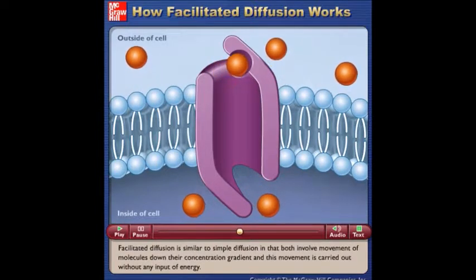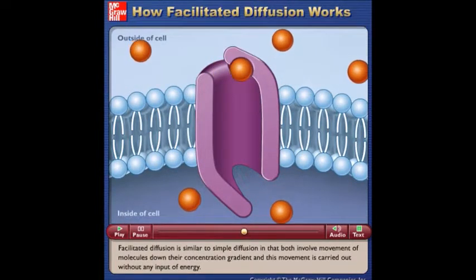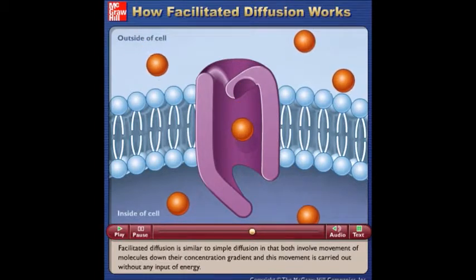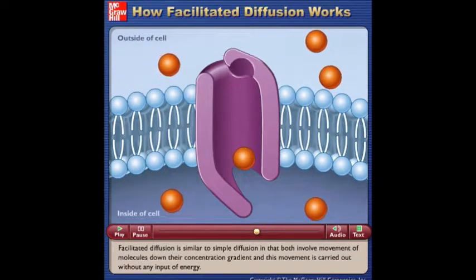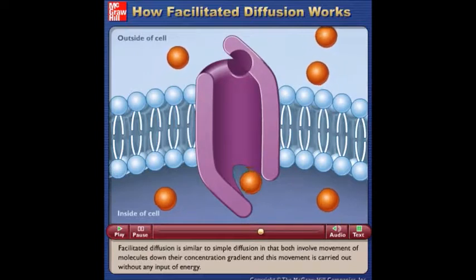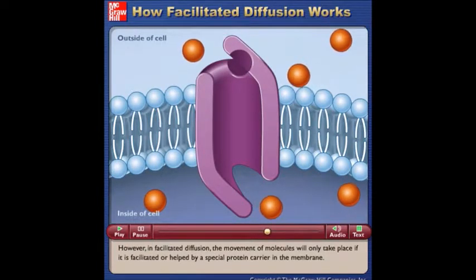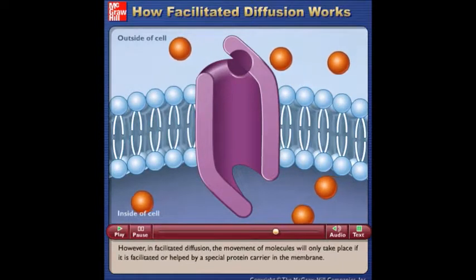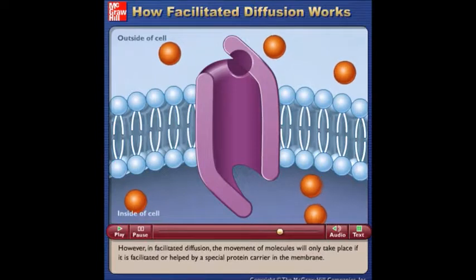Facilitated diffusion is similar to simple diffusion in that both involve movement of molecules down their concentration gradient, and this movement is carried out without any input of energy. However, in facilitated diffusion, the movement of molecules will only take place if it is facilitated or helped by a special protein carrier in the membrane.